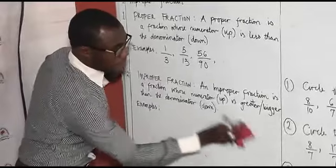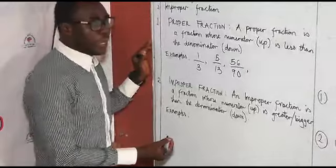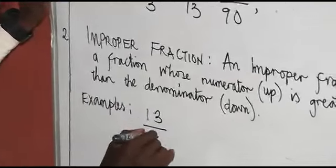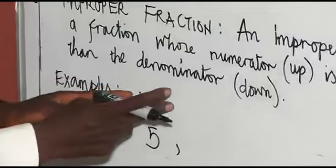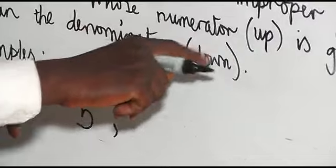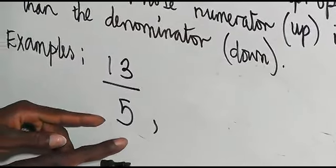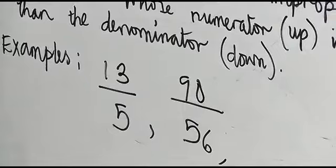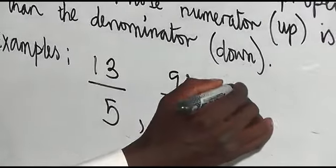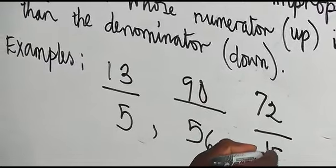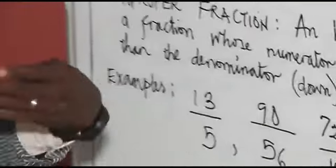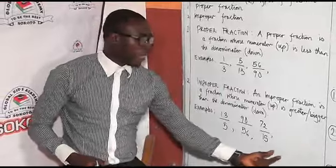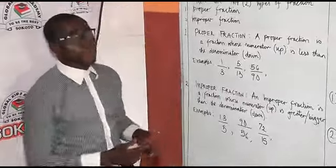Now let's use numbers. For example, we can use parts from our proper fraction examples. That is, 13 over 5 — 13, the bigger number, becomes the numerator, and 5, the smaller number, becomes the denominator. Another example: 90 over 56. And also 72 over 15. So the number at the numerator is bigger than the number at the denominator — that gives you an improper fraction.